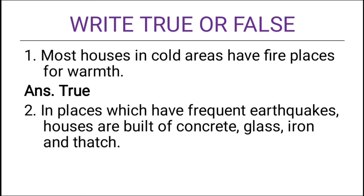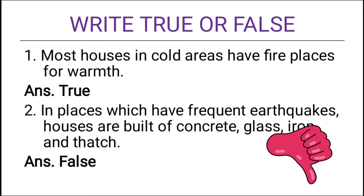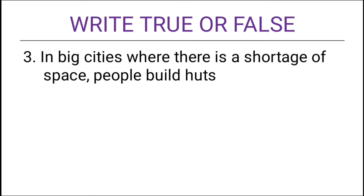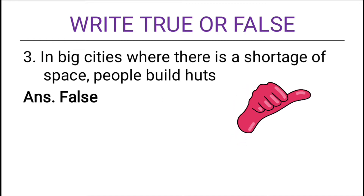Second true/false: in places which have frequent earthquakes, houses are built of concrete, glass, iron, and thatch. The answer is false. Third: in big cities where there is shortage of space, people build huts. This is also false, because in big cities they build big apartments so that they can save space.